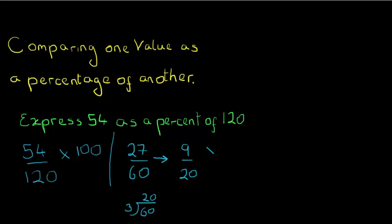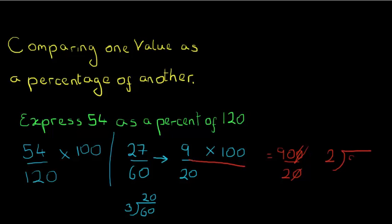So our original 54 over 120 has simplified right down to 9 over 20. Now we bring in the times 100: making that line long, 9 times 100 is 900 and the bottom stays the same. I can simplify this to 90 over 2, and dividing: 2 into 9 goes 4 remainder 1, and 2 into 10 goes 5. So expressing 54 as a percentage of 120, the answer is 45 percent.